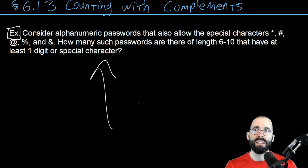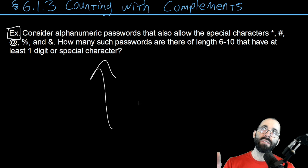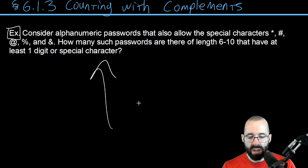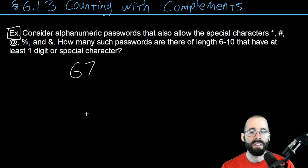Without the requirement, it's pretty easy. There were 62 alphanumeric, and now five more, so there's 67 options. Without the requirement, it's just adding up all the length six up to the length ten.